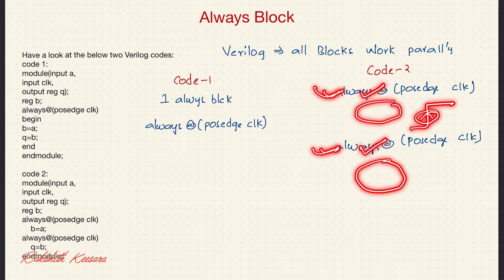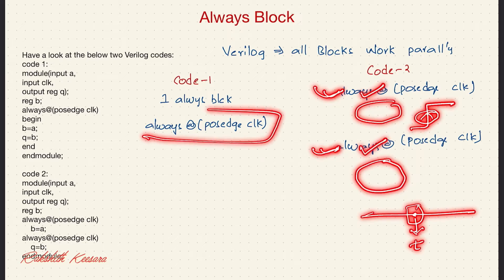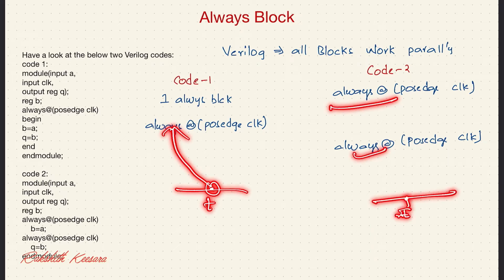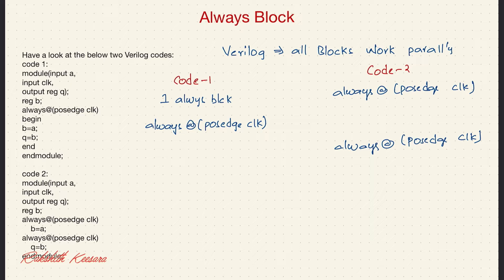While in the first code there is only one always block, so at the same time step only that one block will execute. But in the second code, since there are two always blocks, at the same time step these two blocks will start executing. So the concept is clear — now let us see the code.